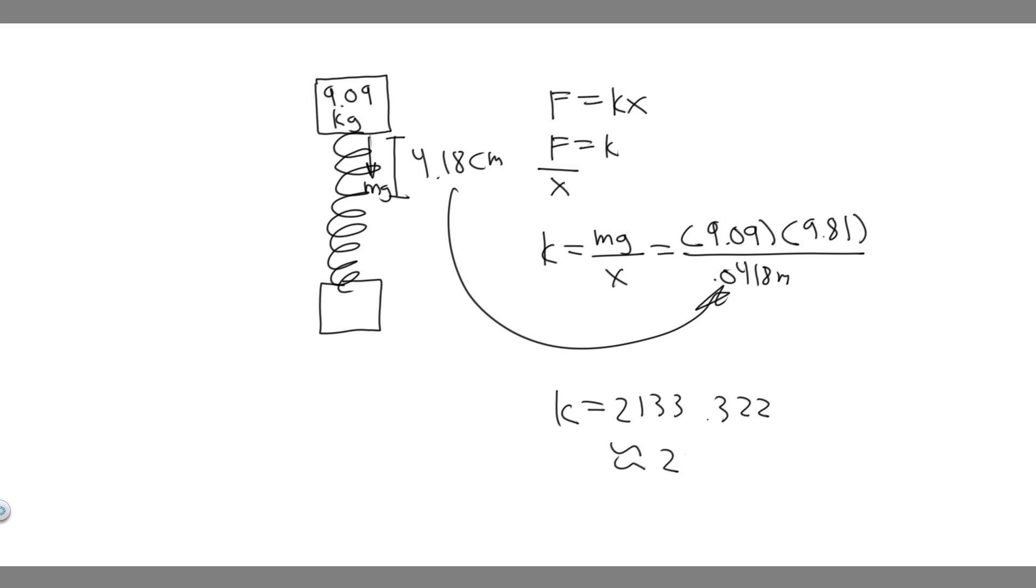I'm just going to round to a whole number, so 2,133. Keep in mind what we measure K in. K is measured in Newton meters because force is measured in Newtons and this is in meters. So it's Newton per meter. So 2,133 Newton per meter. This is going to be K or the spring constant. This is going to be your answer and hopefully you found this useful.